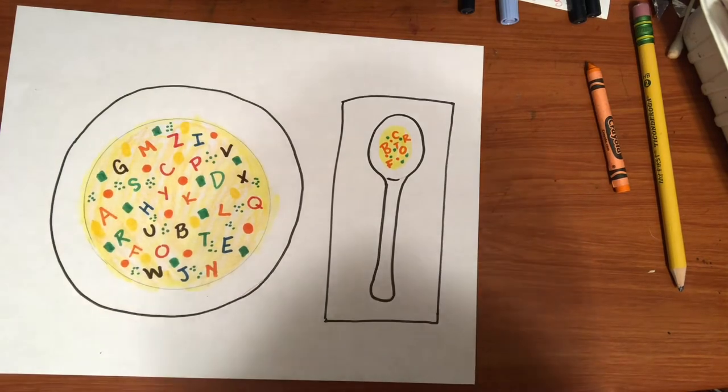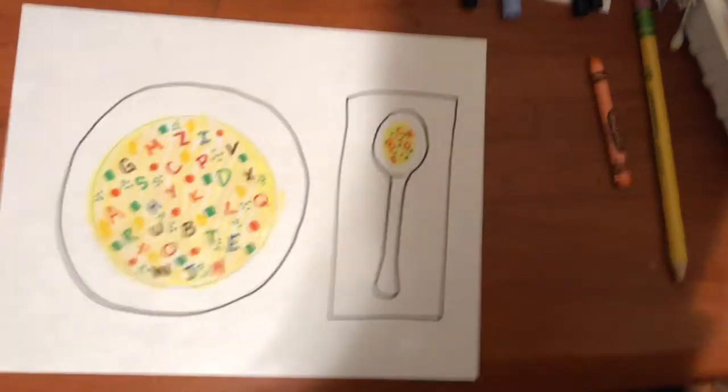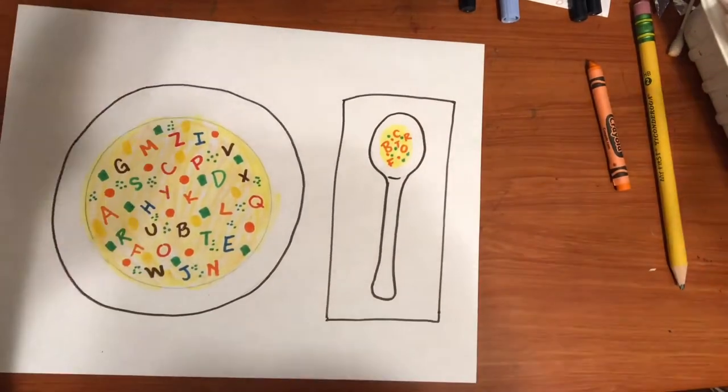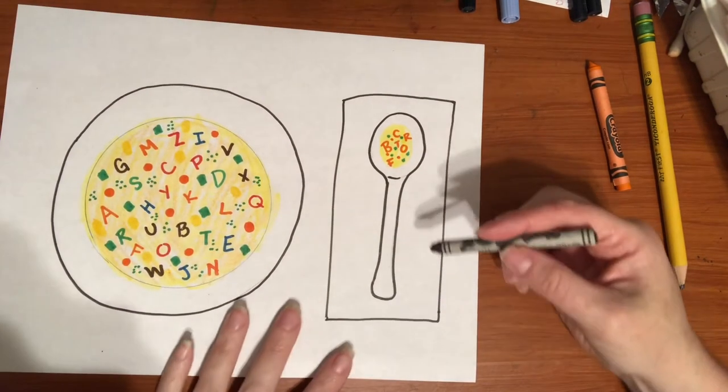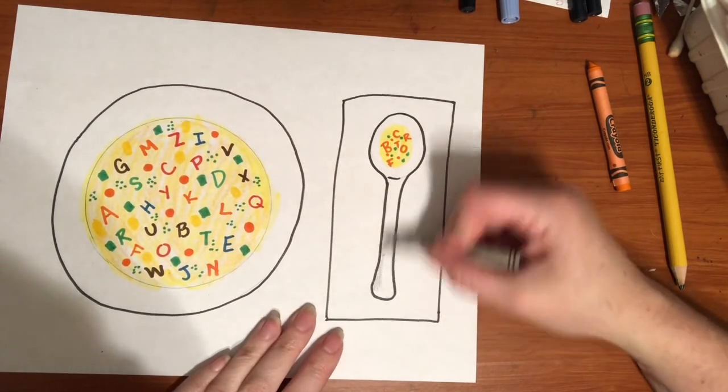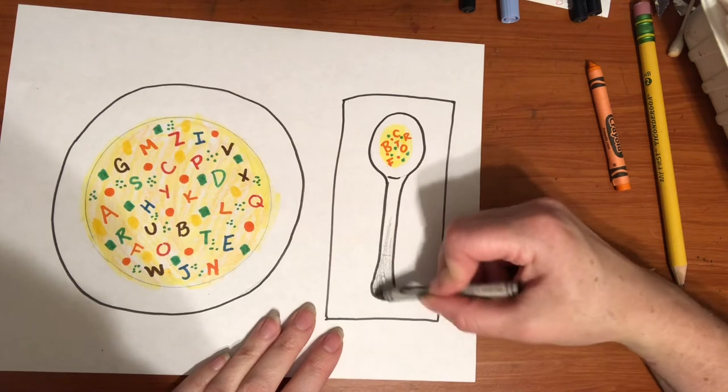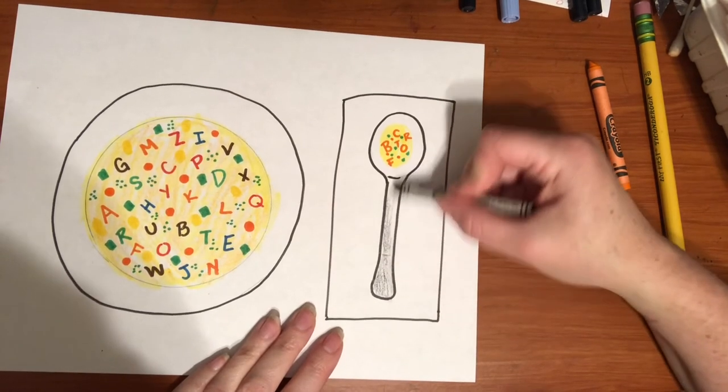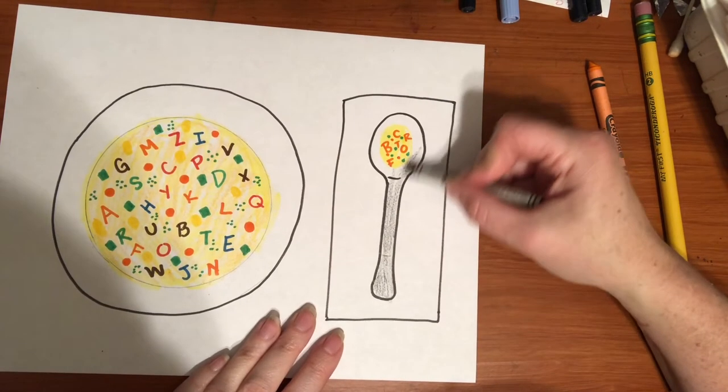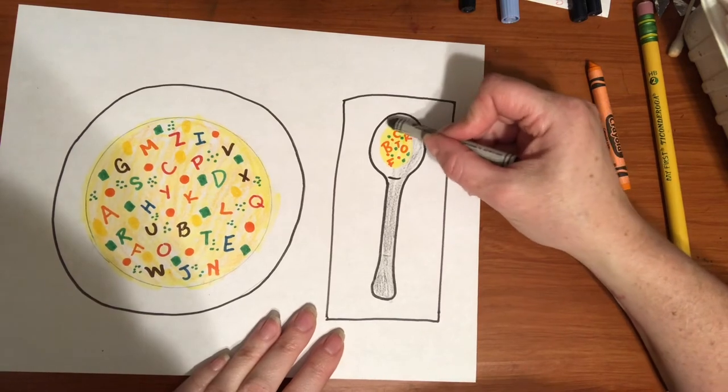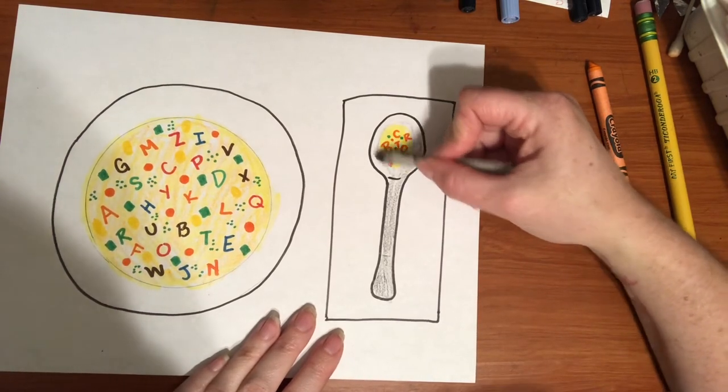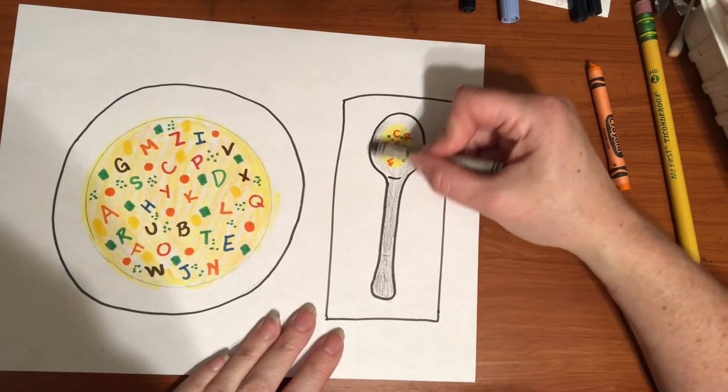Then we're going to want to take either a gray or black crayon, and we're going to lightly color our spoon in with the gray. I want to color around where the soup is in the spoon.